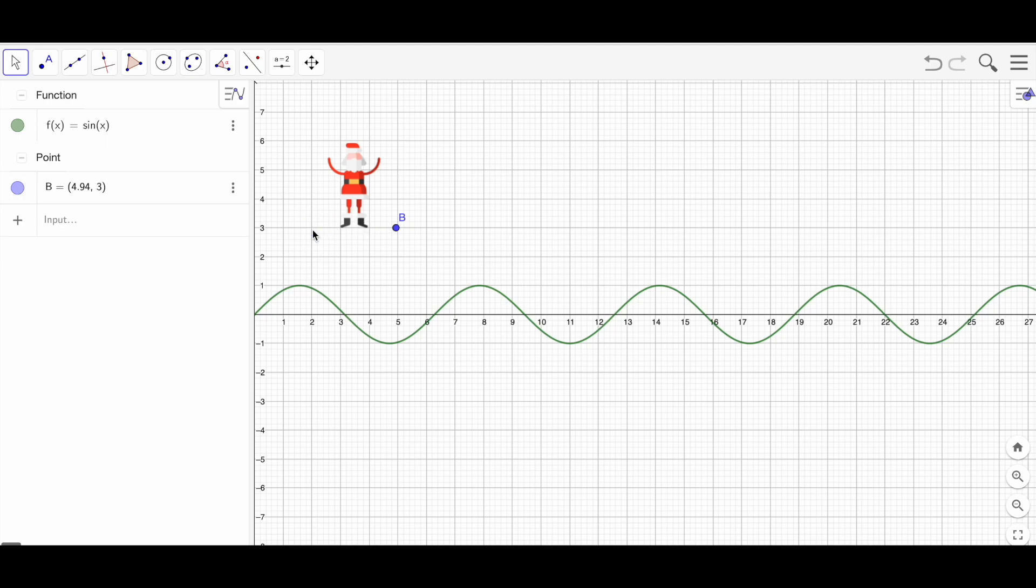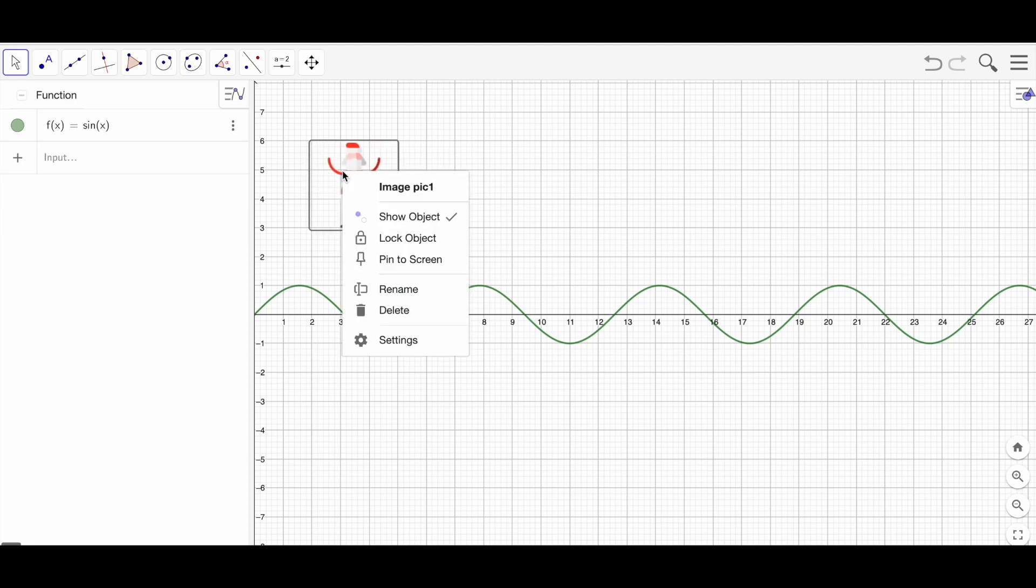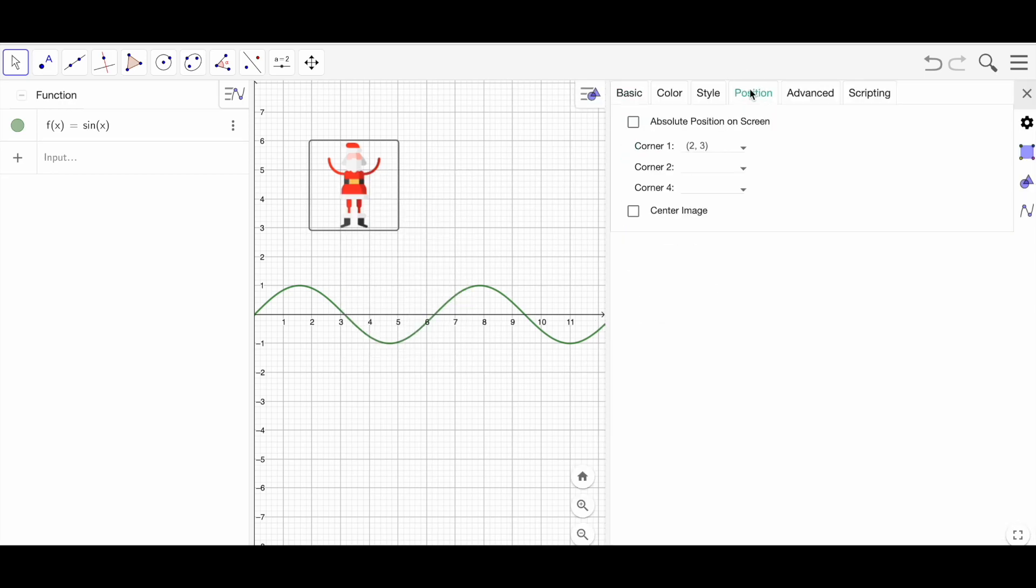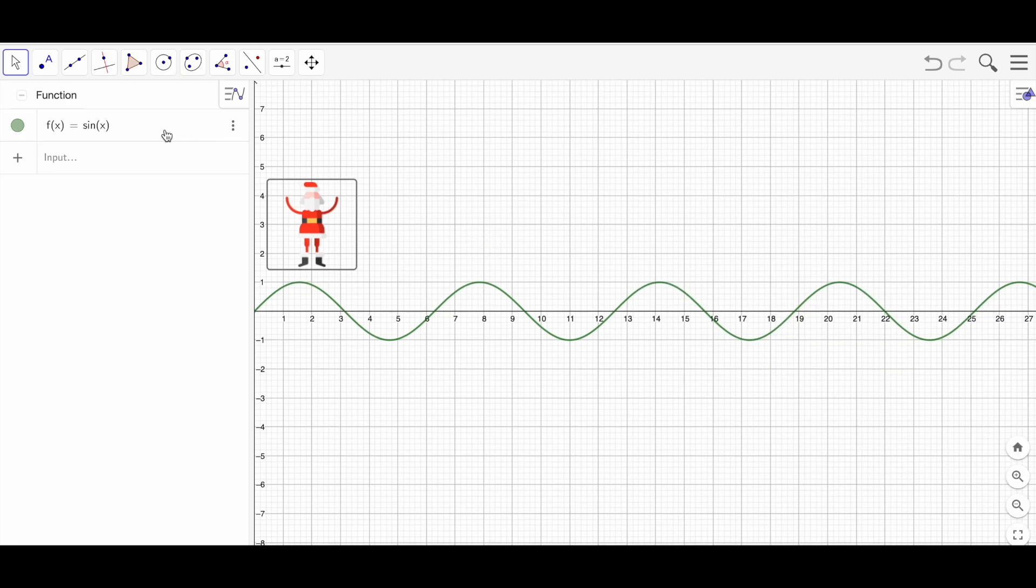Delete point A and B. Once it is deleted, right-click on the image, go to settings. Here is the position. You will see a point. In the center image we are going to fix this point as the point on the curve, but we didn't create that. So let's create a point on the curve first of all.